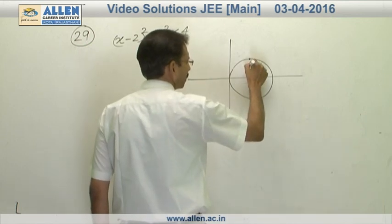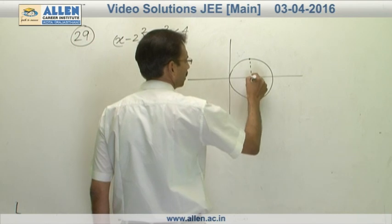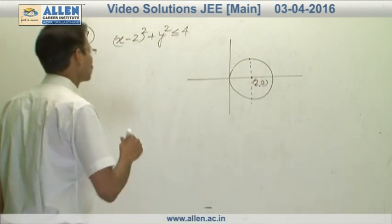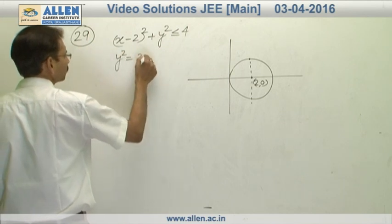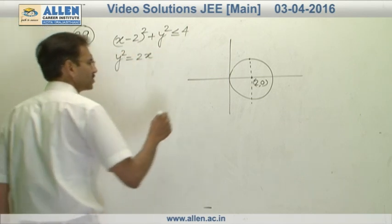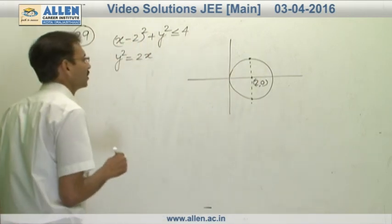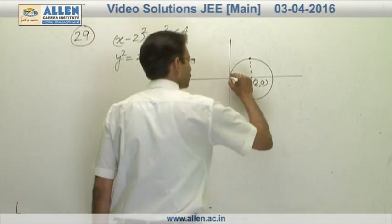This is a diameter 2 comma 0 and that parabola y square equals to 2x is passing through these 2 extremities 2 comma 2 and this is 2 comma minus 2. So this is a parabola.